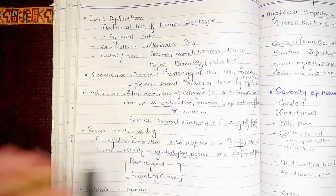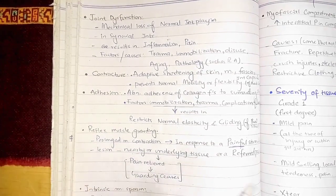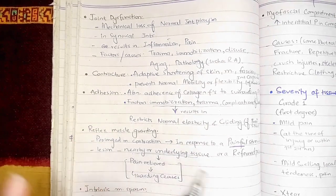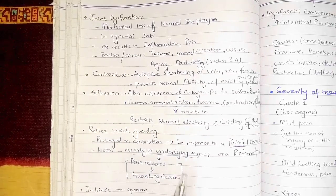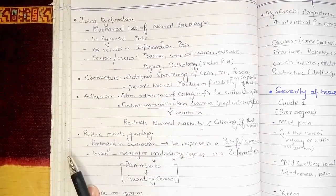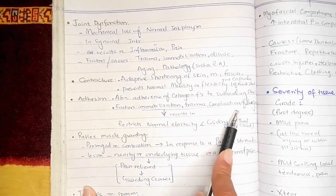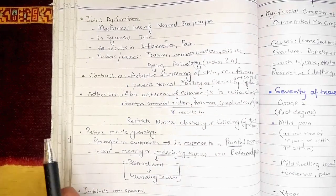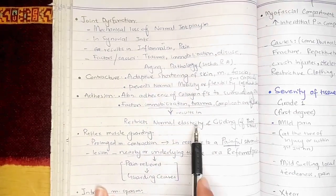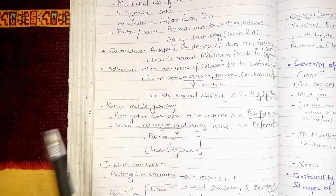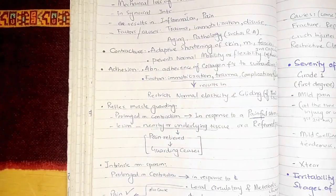Then we have adhesions. Adhesions occur when the collagen fibers of a particular structure are abnormally adhered to the collagen fibers of the surrounding structures. Adhesions can result from immobilization, trauma, or complications of surgery, and these factors result in restriction of the normal elasticity and gliding of that structure. For example, if there is adhesion of the muscles, it cannot be as elastic or glide as easily as it used to.